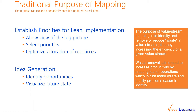Let's start with a basic question: why do you do value stream mapping? The purpose is to identify and remove or reduce waste in value streams, thereby increasing efficiency. Waste removal increases productivity by creating leaner operations, which in turn makes waste and quality problems easier to identify. Value stream mapping accomplishes these goals by allowing the team to see the big picture of how materials and information flow through the manufacturing process, helping them identify waste, set priorities, and generate ideas for the next future state.